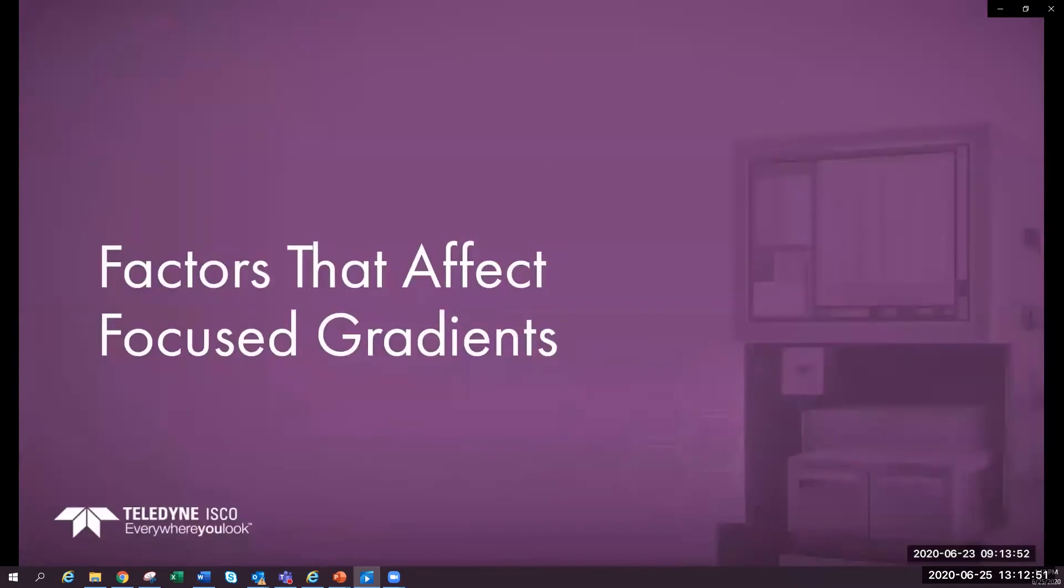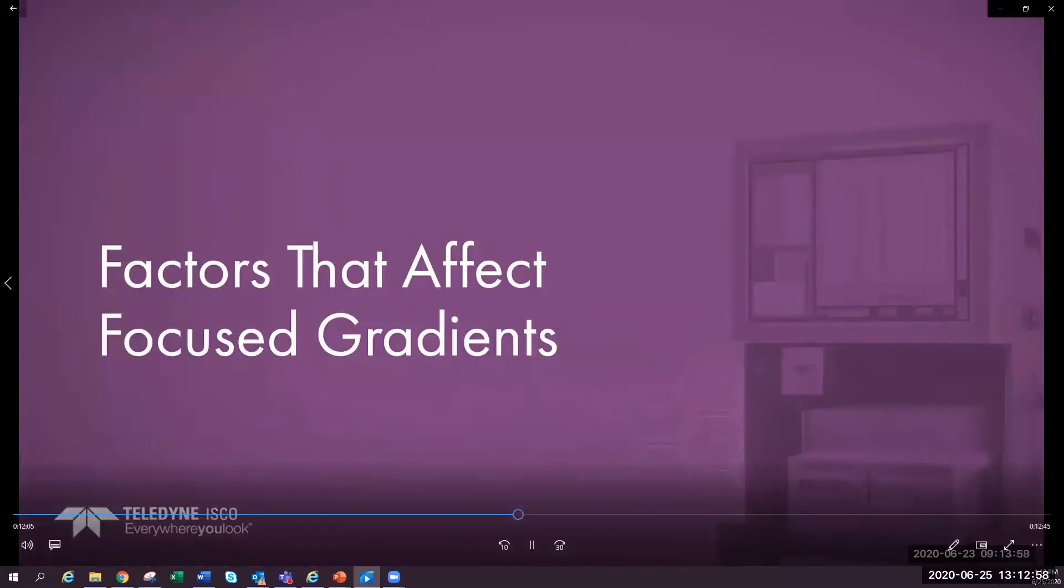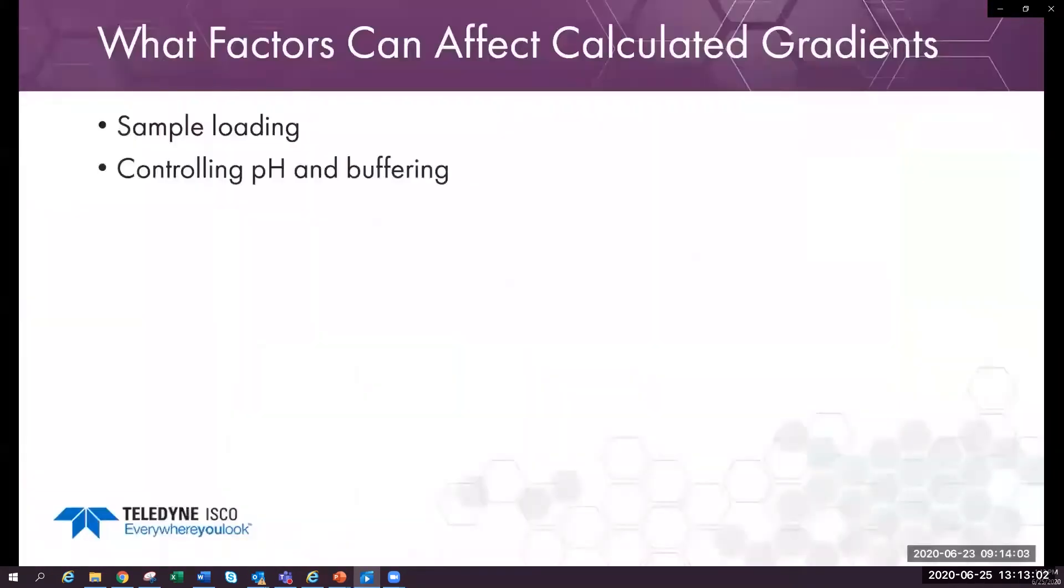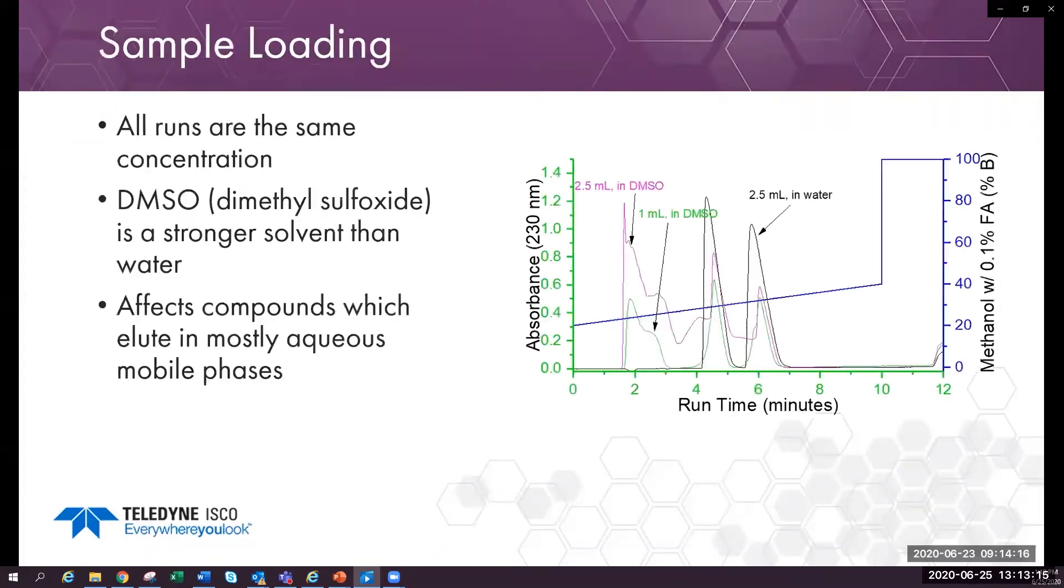Now that we know many different ways to create a focused gradient from scouting runs, let's see what affects retention of compounds we want to purify. The two most common factors most people will see are from sample loading and from running ionizable compounds, which can be in different forms depending on the pH of the mobile phase.